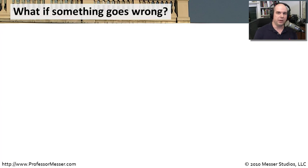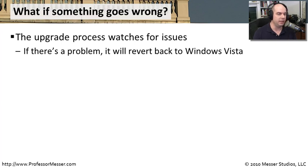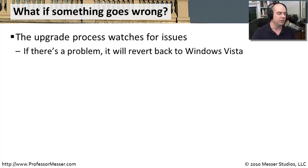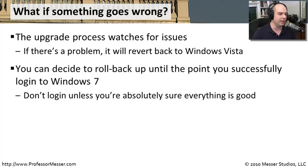Whenever you're installing a new operating system, there's a chance something could go wrong. Fortunately, the upgrade process itself watches for issues at steps along the way. If anything goes wrong, the entire installation upgrade process will roll everything back to the previous version - back to Windows Vista. When you reboot, it's exactly the way you left it. You won't be left in the middle with an unusable configuration. The upgrade process is smart enough to roll back to the last good configuration.